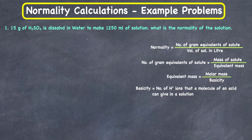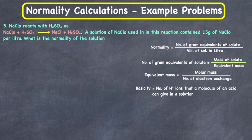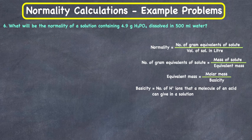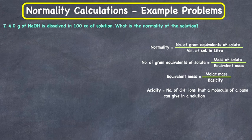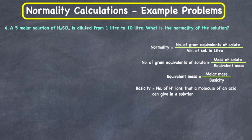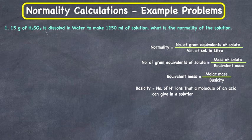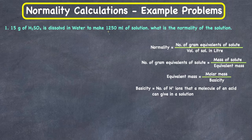Hello everyone. In this video I'm going to go over some example problems on normality. We'll be going over at least six to seven example problems to understand the concept of normality and how to use it to solve numerical problems. The first example problem: 15 grams of H₂SO₄ is dissolved in water to make 1200 ml of solution, and they are asking us to calculate the normality.